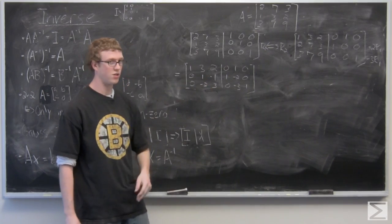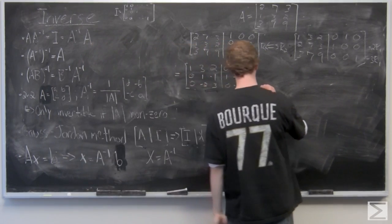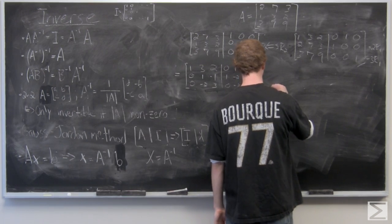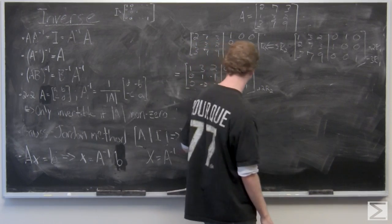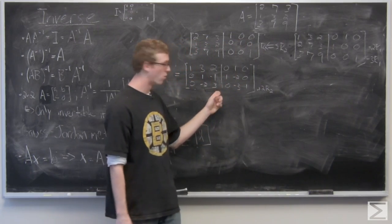So now what we need to do is add two of R2 to R3, and that's in order to get rid of this zero here and hopefully make this three entry here a 1.